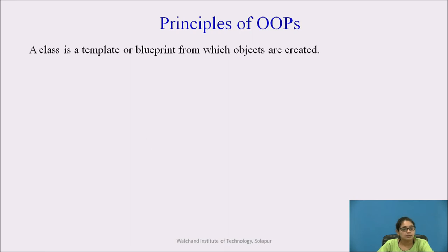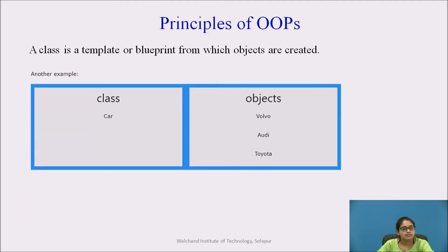Class is a template or blueprint from which objects are created. For another example, Car is a class and there are objects like Volvo, Audi, and Toyota. Volvo, Audi, and Toyota are specific classifications of cars, while Car is the general classification. So Car is referred to as a class, and Volvo, Audi, and Toyota are referred to as objects.